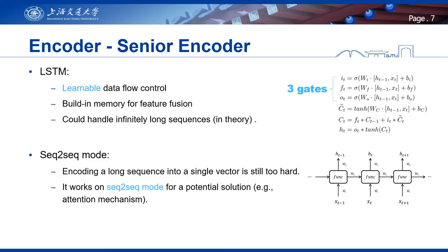Then is the senior encoder. For the senior encoder, we use long short-term memory (LSTM). First, LSTM can learn to control data flow automatically through sequential data using three gates that control what information is collected. Second, there is a built-in structure in LSTM called the memory cell for storing combined features. Compared to other gated recurrent layers without built-in memory, like GRU, we find that the built-in memory makes feature combination more stable.